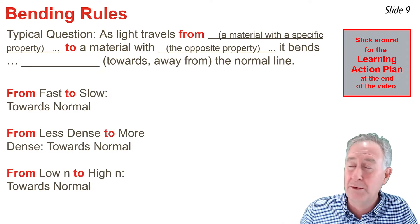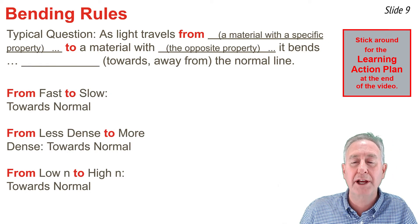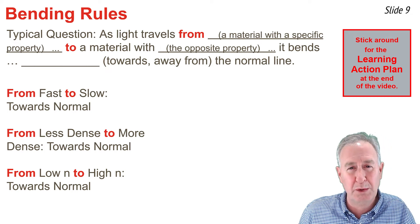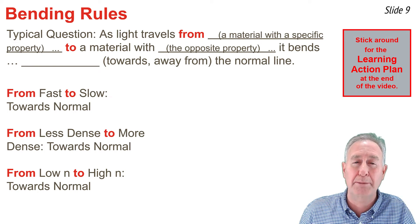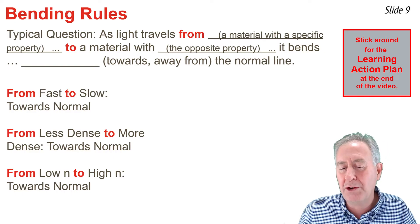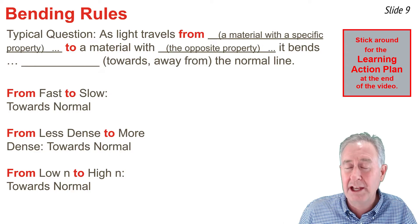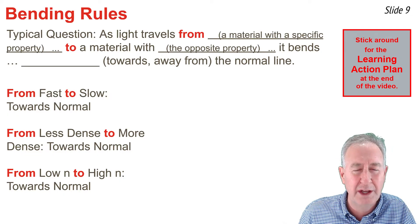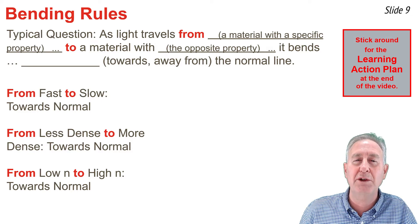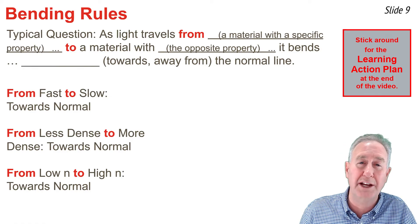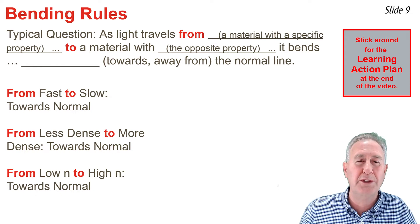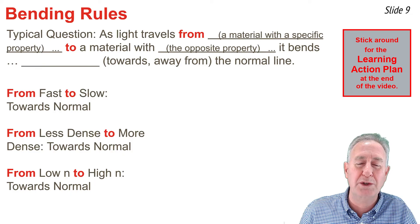Here are the possibilities for bending towards the normal line. From fast to slow — I remember this with the mnemonic FST: fast to slow towards. You could also get from less dense to more dense — light travels faster in less dense material and slower in more dense material, so less dense to more dense is like fast to slow, and the bending is towards the normal line. Finally, from a low index of refraction to a high index of refraction — low n means fast, high n means slow — so once more this is fast to slow, bending towards the normal line.